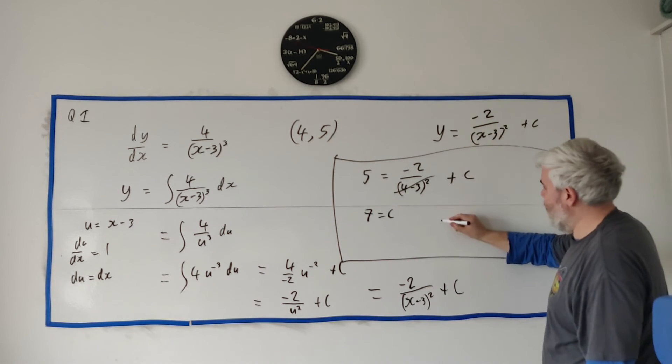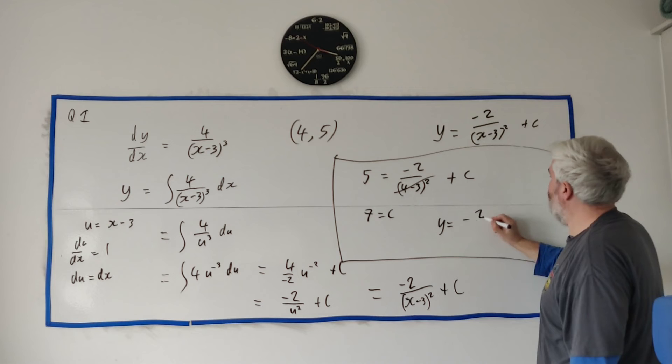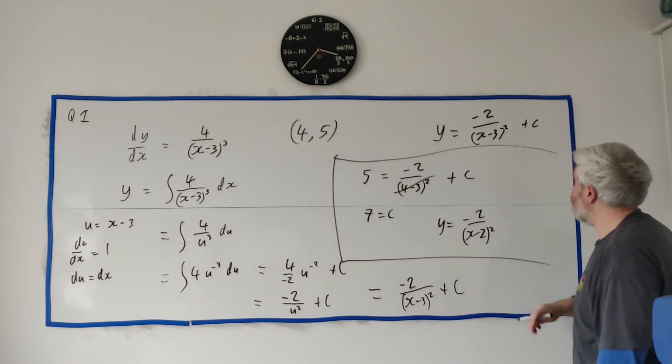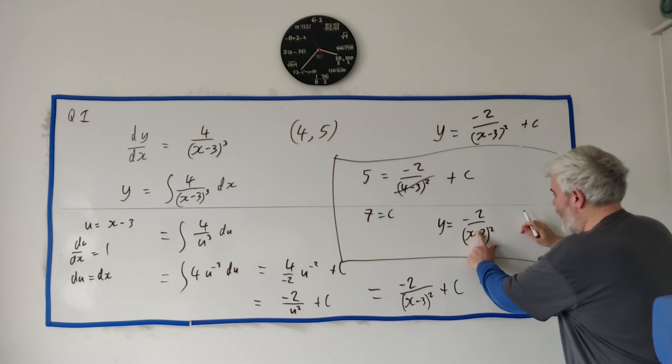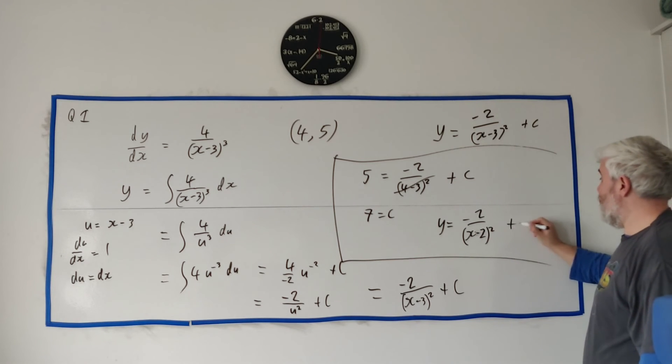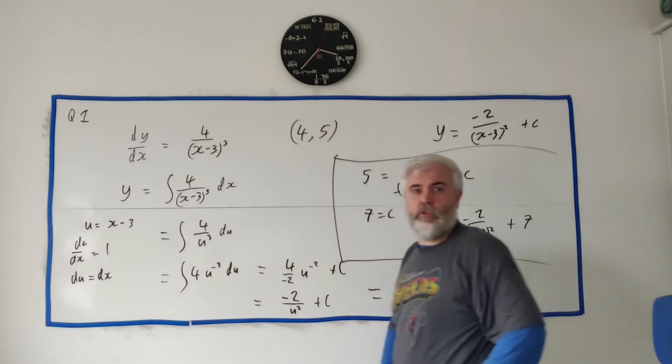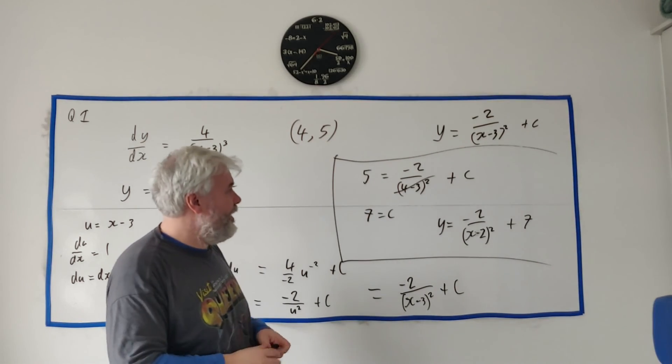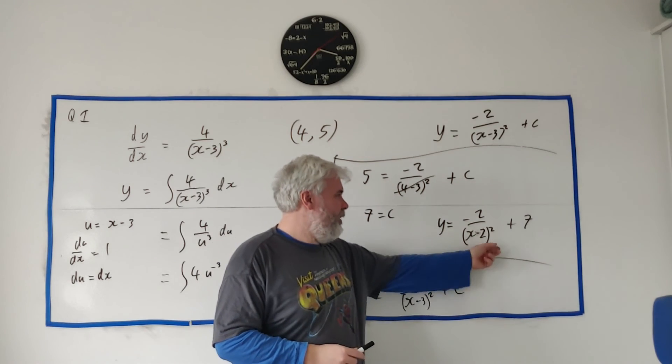And then we just write the answer again. y is equal to minus 2 over (x-2) squared, very bit hard to see there, (x-2) squared plus 7. So that is the full equation of that curve. And you can go ahead and check your answer.